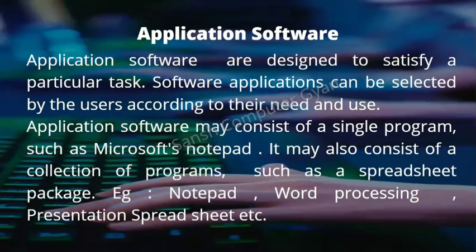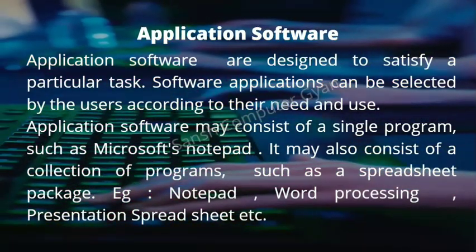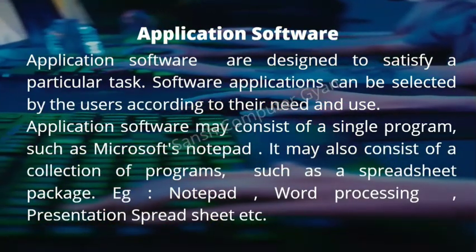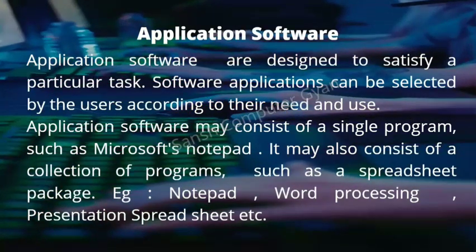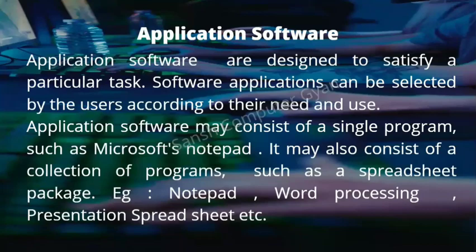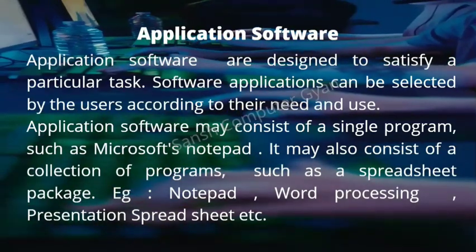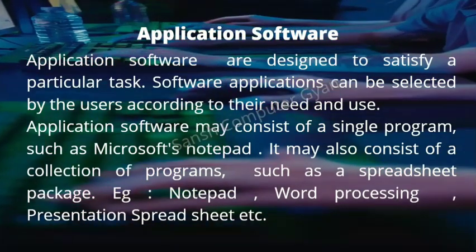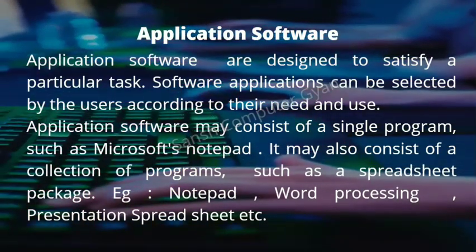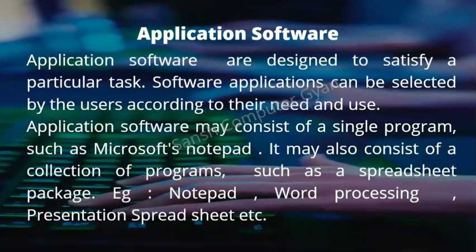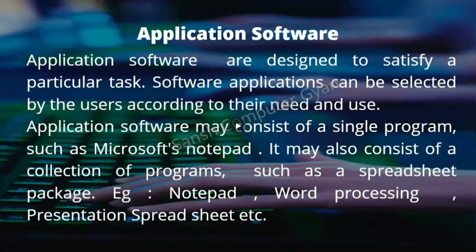Application software is designed to satisfy a particular task. For example, for letter writing we use Word, for accounting or working with data sheets and filters we use Excel, for database work we use MS Access, and for presentations we use PowerPoint. These are different Microsoft software that perform different tasks. Application software satisfies a particular need according to the user.